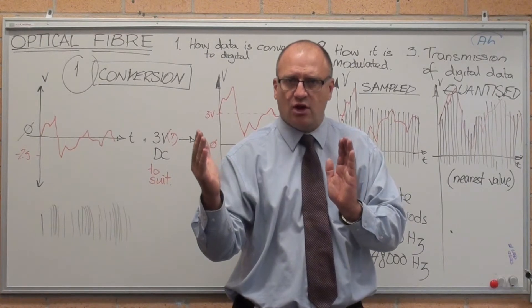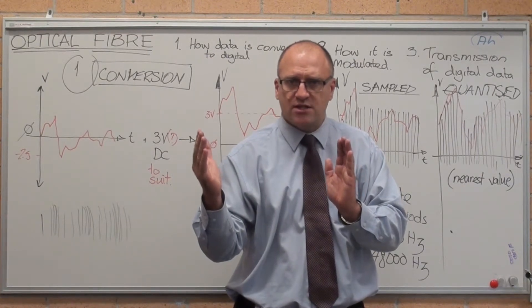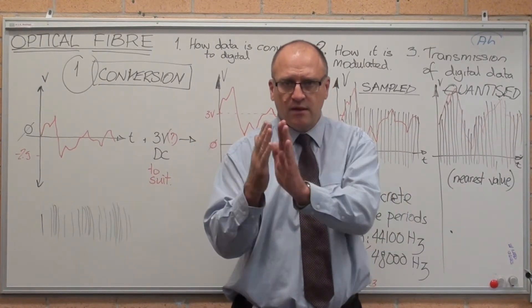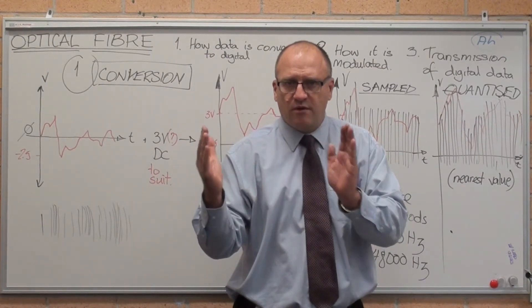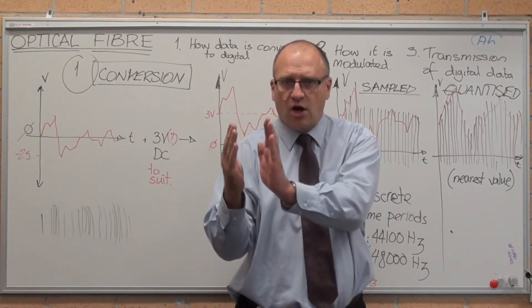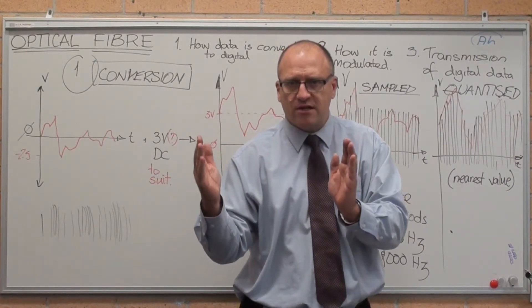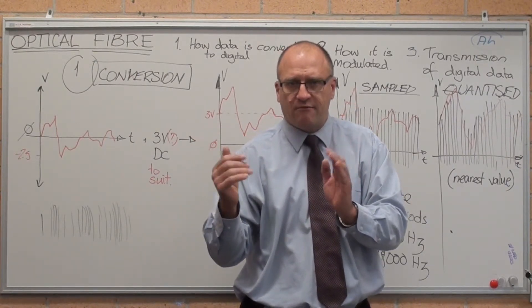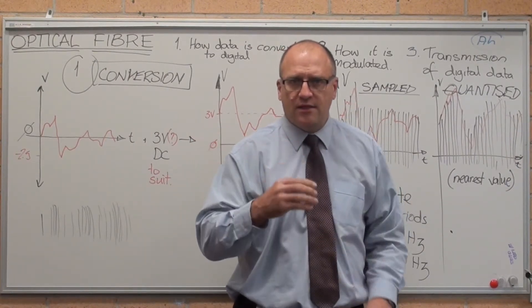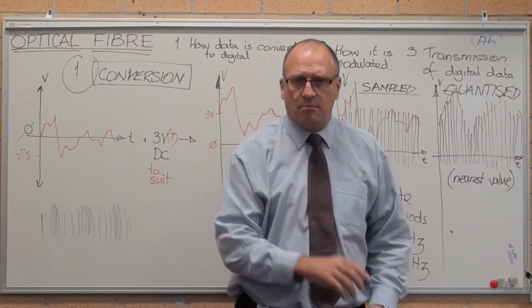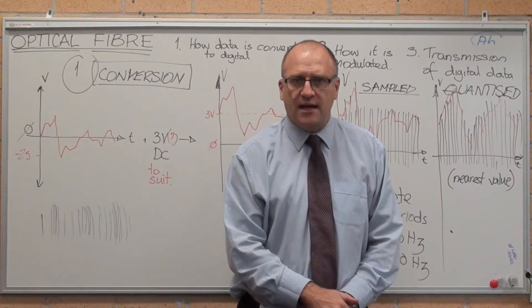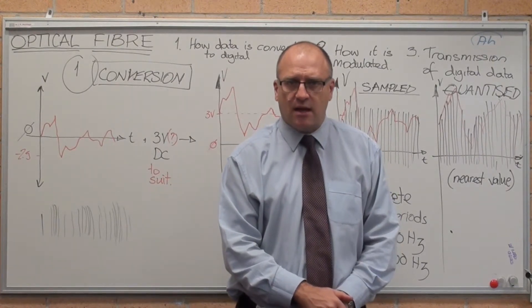The air is rarefied — the opposite of compressed. So we've got areas of high pressure where it's compressed and low pressure where it's rarefied. That pressure wave is travelling to the microphone in the video camera.